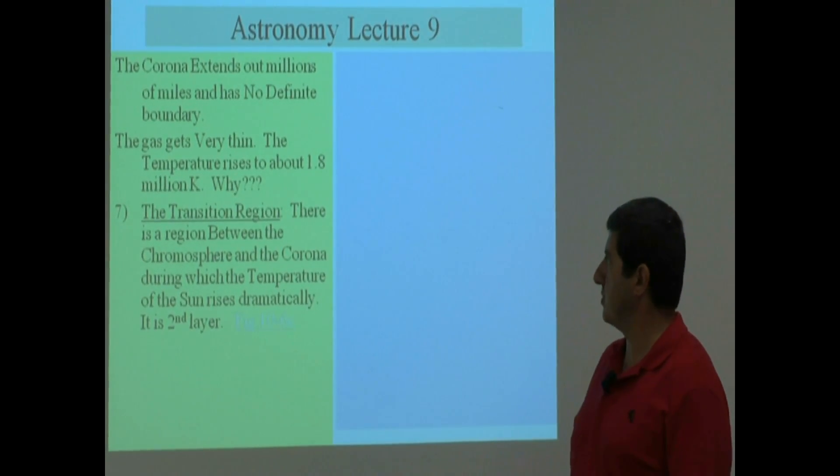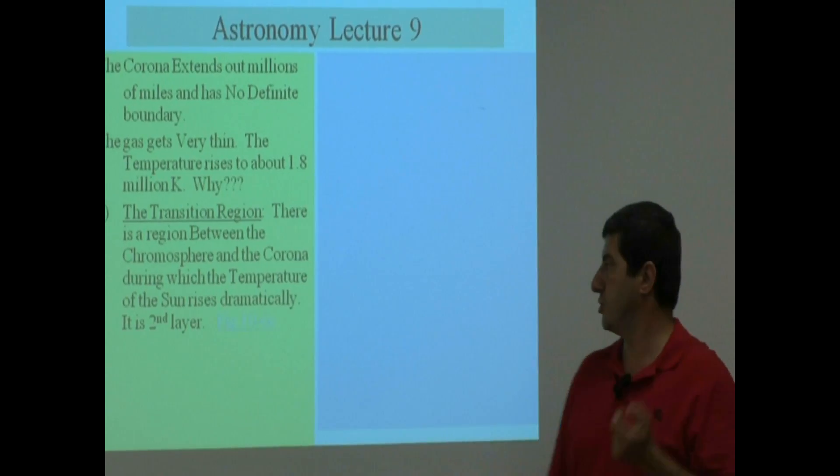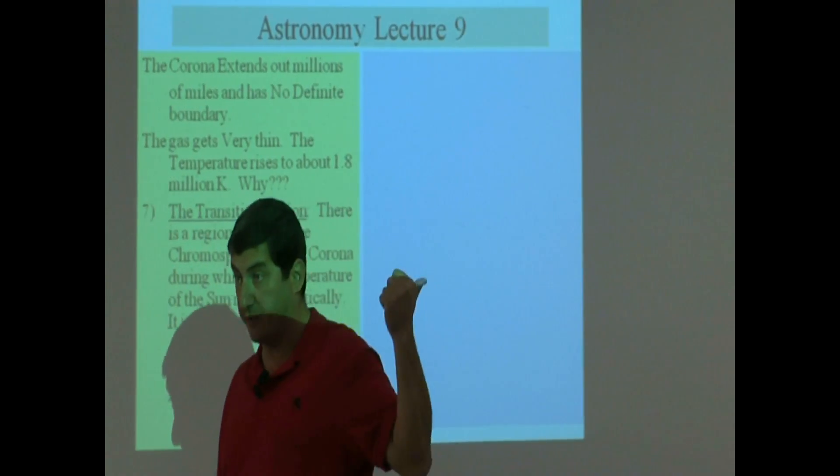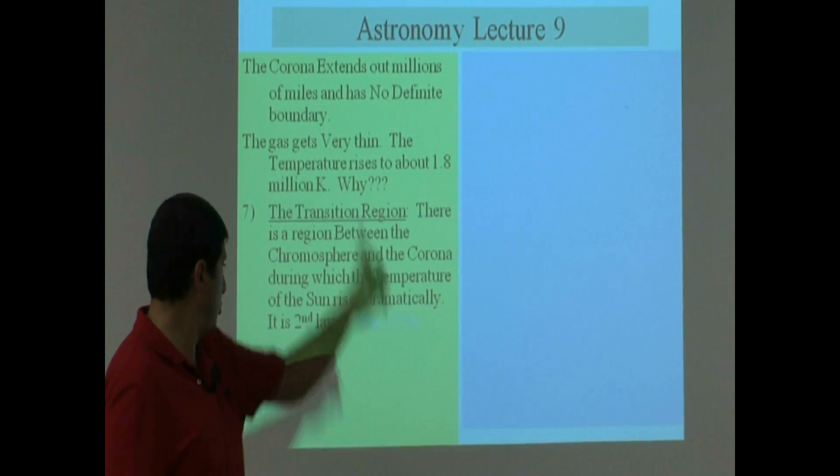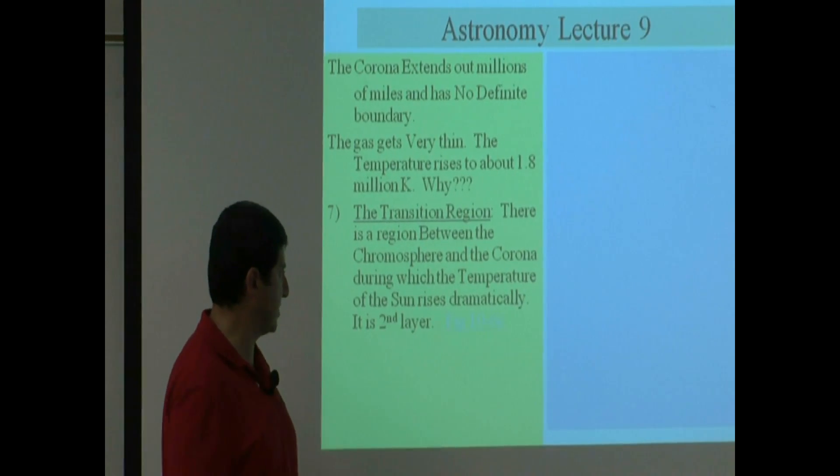The transition region. There is a region between the chromosphere and the corona during which the temperature of the sun rises dramatically. That's the effect that I was showing you in the table. All the way up. And this is what we're going to call the second layer of the sun's atmosphere.